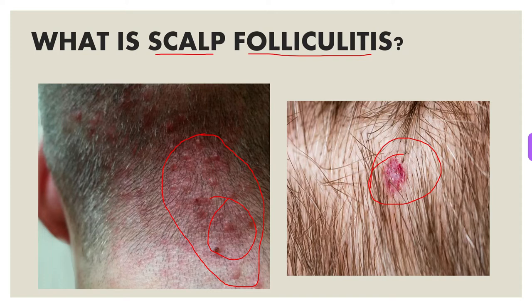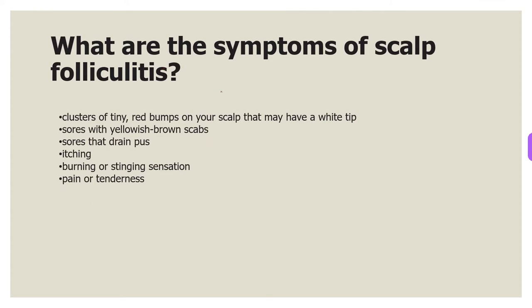Now let's talk about the clinical features and symptoms of scalp folliculitis. Folliculitis initially causes small red bumps that look similar to acne breakouts. Over time it may spread to other follicles and bumps may get larger and more inflamed. Symptoms include clusters of tiny red bumps on your scalp that may have a white tip, sores with yellowish-brown scabs, sores that drain pus, itching, burning or stinging sensation, and pain or tenderness.